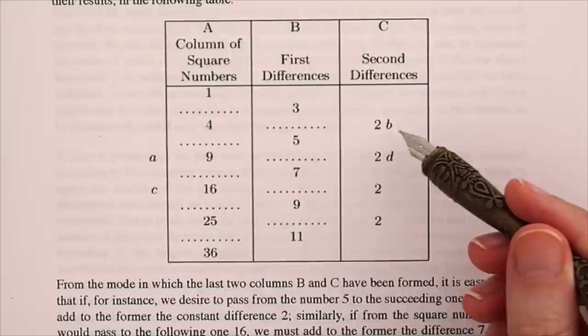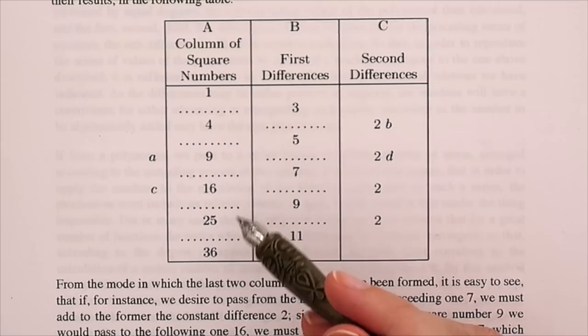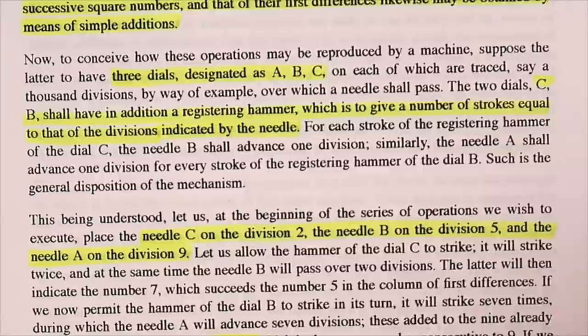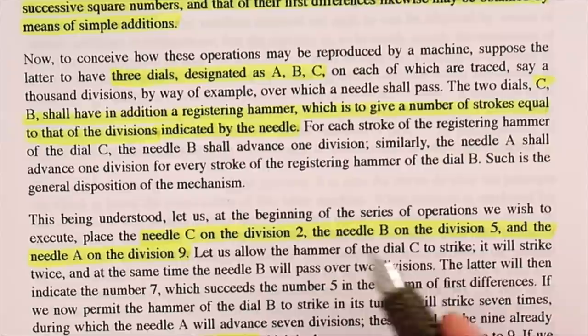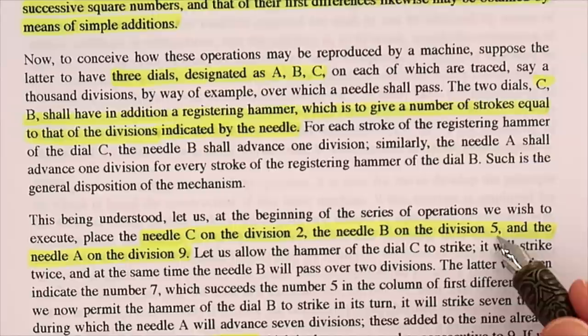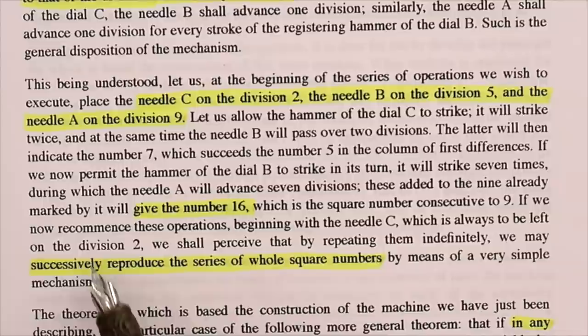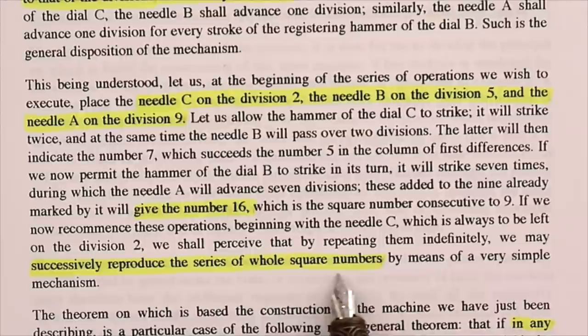From this, if we were given just the numbers 2, 5, and 9, we would be able to reconstruct the entire series of square numbers just through a series of additions. For the machine we would have three dials — A, B, and C — and also two hammers. If we start by placing needle C on 2, needle B on 5, and needle A on 9, then the hammer on C will strike twice, adding 2 onto needle B, so B will now read 7. It will then strike its hammer 7 times, adding 7 onto 9 and giving us the result 16. If we recommence these operations beginning with needle C, which is always to be left on 2, we will successively reproduce the series of whole square numbers by means of a very simple mechanism.